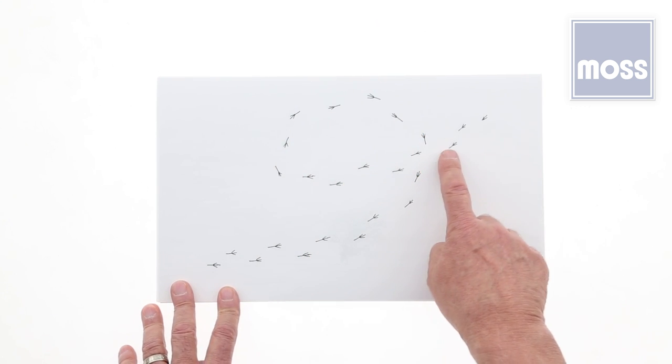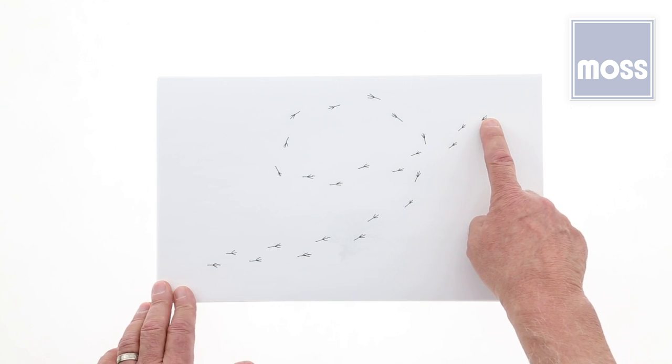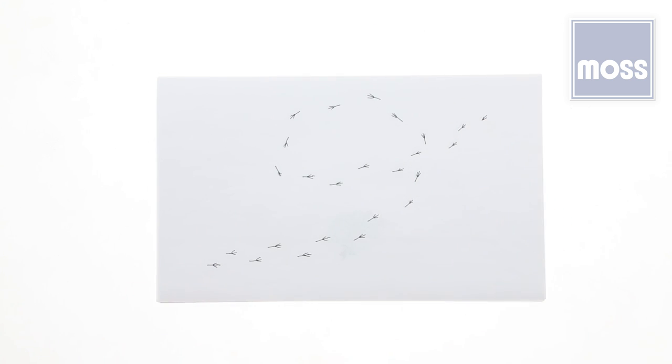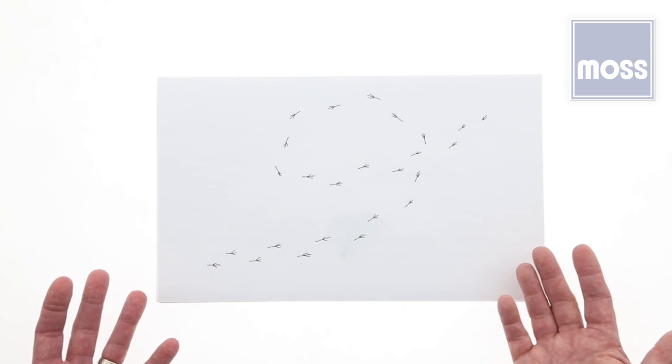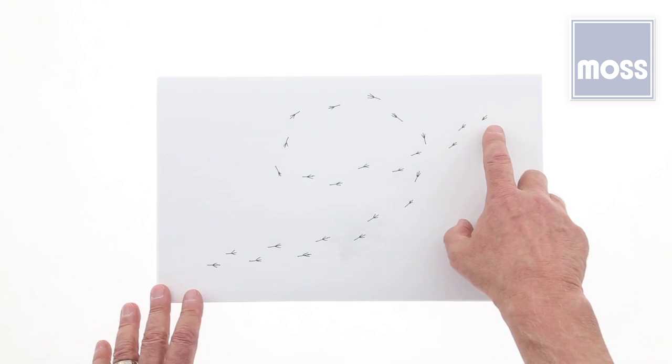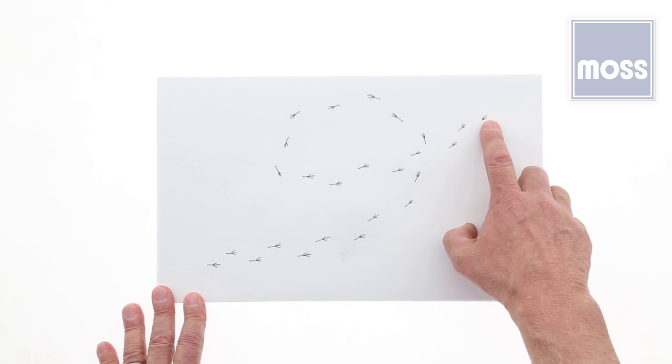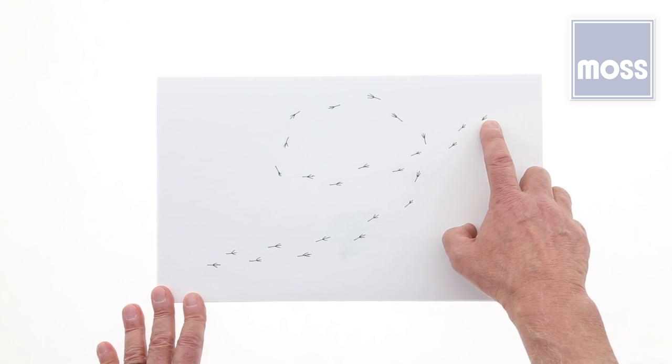If somebody were to say, 'Where was the bird when he flew away?' it's a no-brainer. Right there. Are you sure? Absolutely. How do you know? Because there are no more tracks. This is where he stopped, this is where he flew away.